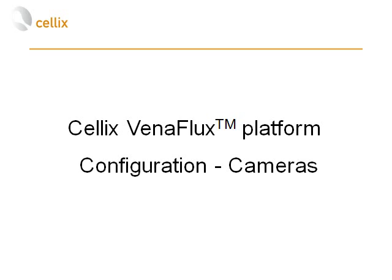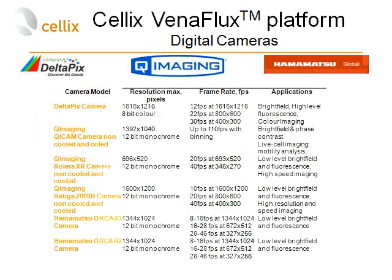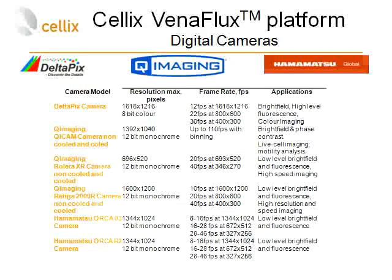We have different options for cameras which are used to acquire digital images during the assay. We currently provide cameras from three different manufacturers: DeltaPix, Qimaging, and Hamamatsu, and they all serve different purposes with different specifications. I will show a comparison chart of different cameras with their resolution, frame rate, and applications. Some cameras can be used for bright field and high fluorescence microscopy, while more sensitive cameras are used for low-level bright field and fluorescent microscopy, live cell imaging, high resolution, and high speed.